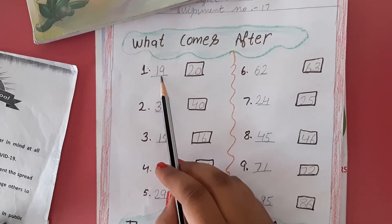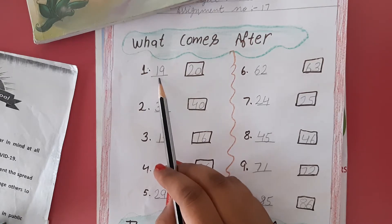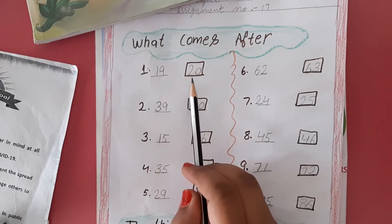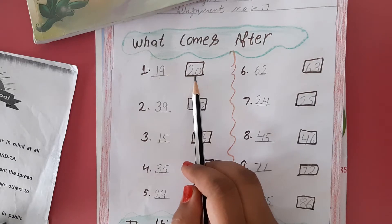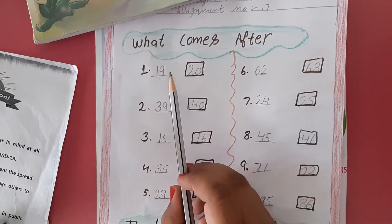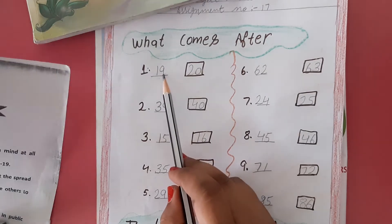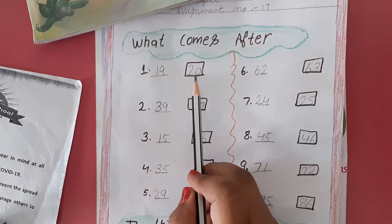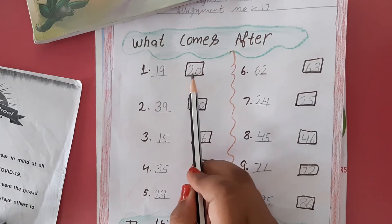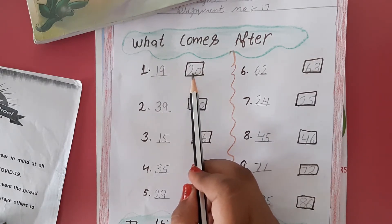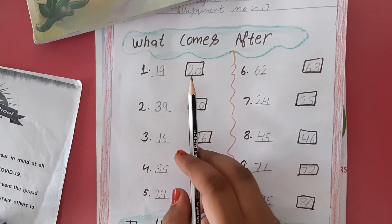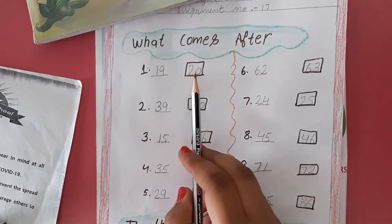Here, 19 is given. You have to fill this box. What comes after 19? That is 20. So we will write here 20.